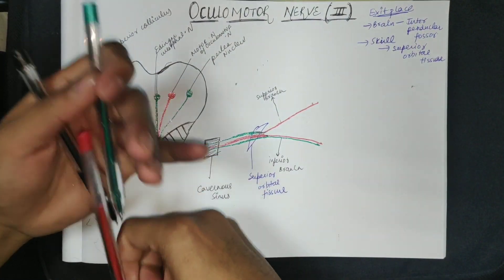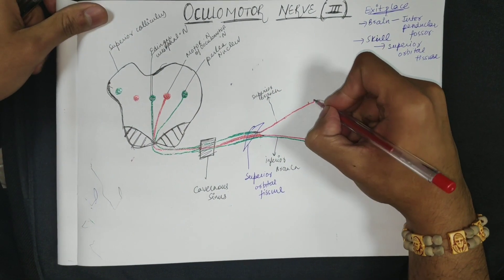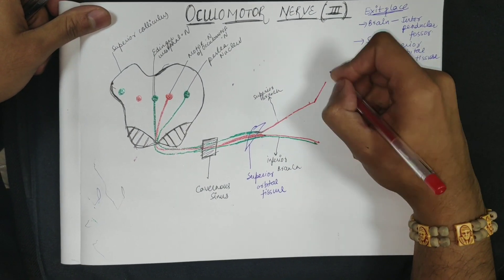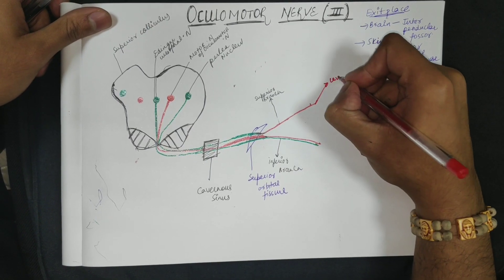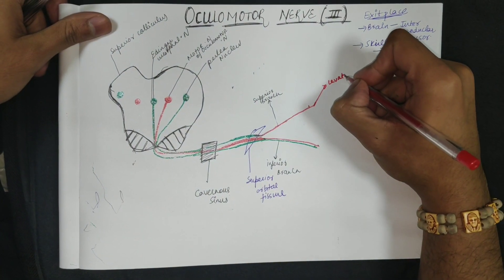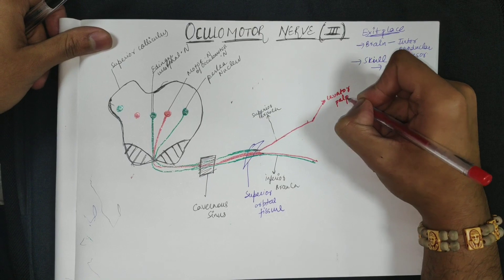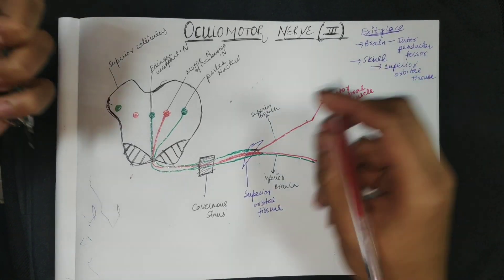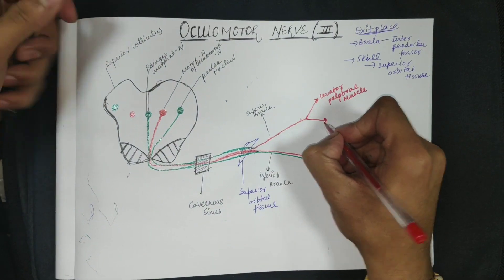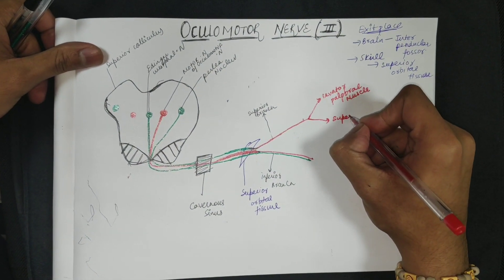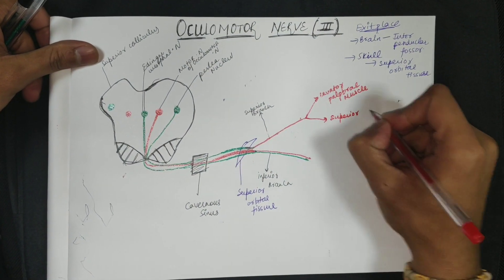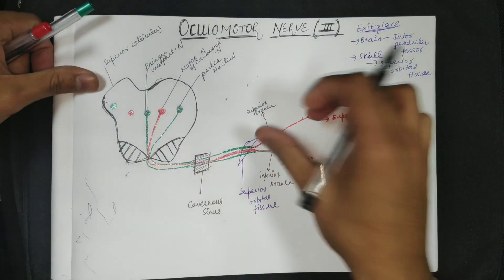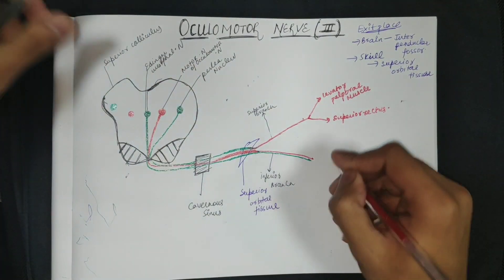The superior branch supplies two extrinsic muscles: the levator palpebrae superioris, which controls the eyelid, and the superior rectus muscle.